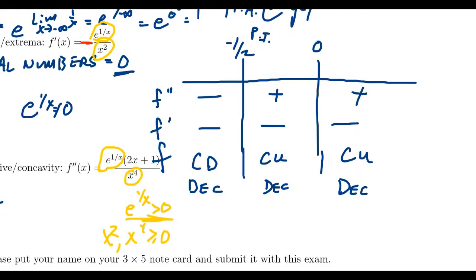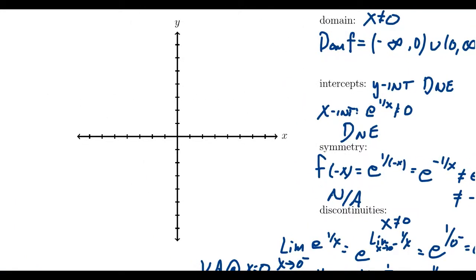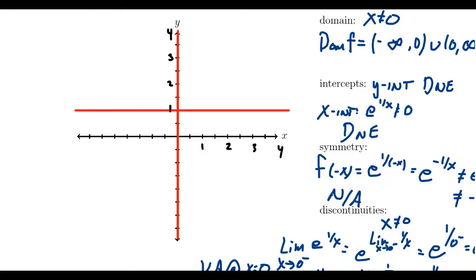Now let's build the graph. We mark a vertical asymptote with a red line over the y-axis, and a horizontal asymptote at y equals 1. The function is undefined at x equals 0. To the right of zero, the function goes up towards infinity. When approaching 0 from the left, the limit is 0, so we place an open point at the origin on the graph.